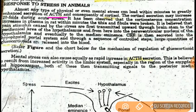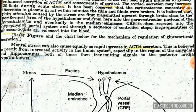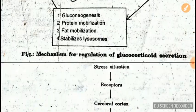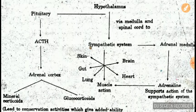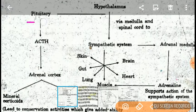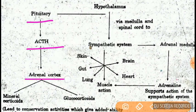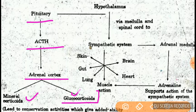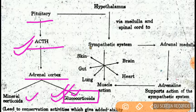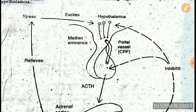Let us talk about ACTH. ACTH is the corticotropin or adrenocorticotrophic hormone, secreted by the pituitary gland. Its function is a stimulating effect on the hormone-producing capacity of the adrenal cortex. The pituitary gland secretes ACTH, which has a stimulating action on the adrenal cortex. The adrenal cortex then releases glucocorticoids, the main example being cortisol.